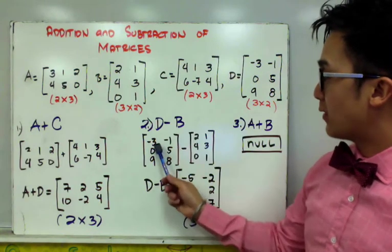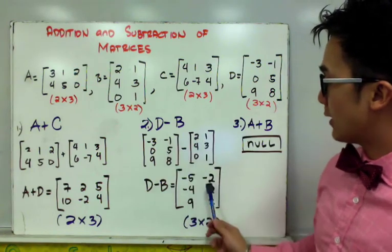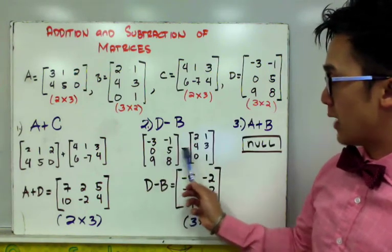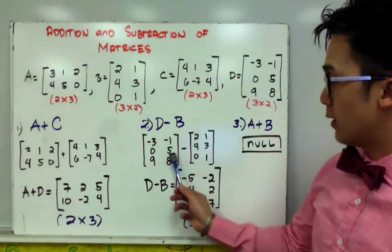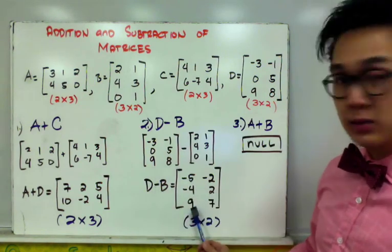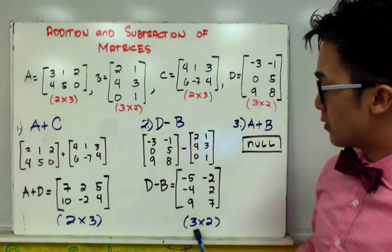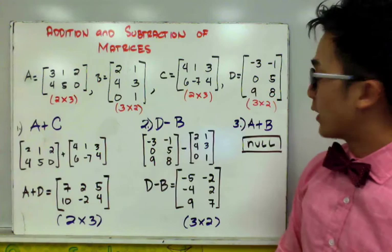So if we have negative 3 minus 2, we'll have negative 5. Negative 1 minus 1 is negative 2. 0 minus 4 is negative 4. 5 minus 3 is 2. 9 minus 0 is 9. And 8 minus 1 is equal to 7, which is another 3 by 2 matrix.